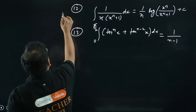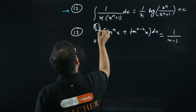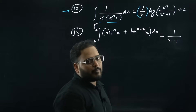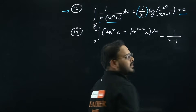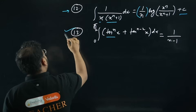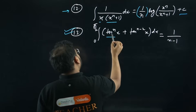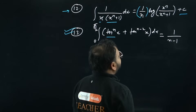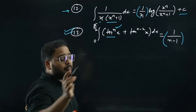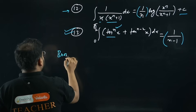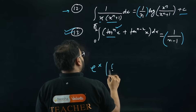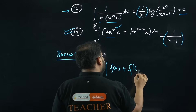Trick 12: If you have integration of x(x^n + 1), the answer is (1/n) · log|x^n / (x^n + 1)| + C. Similarly, if you have ∫(tan^n x + tan^(n−2) x) dx, the answer becomes (1/(n−1)) · tan^(n−1) x + C. Bonus trick: The formula ∫e^x[f(x) + f'(x)] dx = e^x · f(x) + C is extremely important and standard from NCERT — questions on this are certain to come.